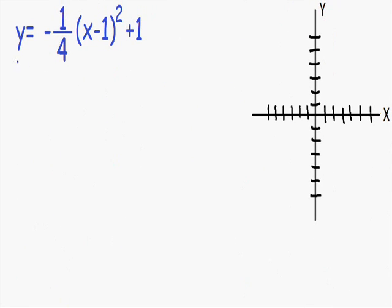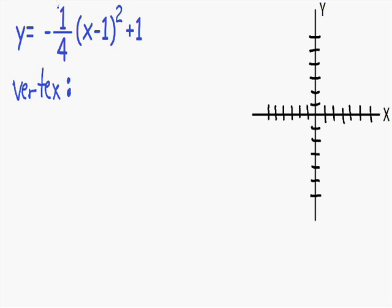Let's dive into an example. Here we have the parabola: y equals negative one-fourth multiplied by x minus one, squared, plus one. The first thing we want to do when graphing a parabola is find the vertex. But before that, we can figure out the direction it opens. Since it is written in terms of y, it's going to be pointed up or down. Since our A is a negative value — negative one-fourth — we know it's going to be pointed in the downward direction.